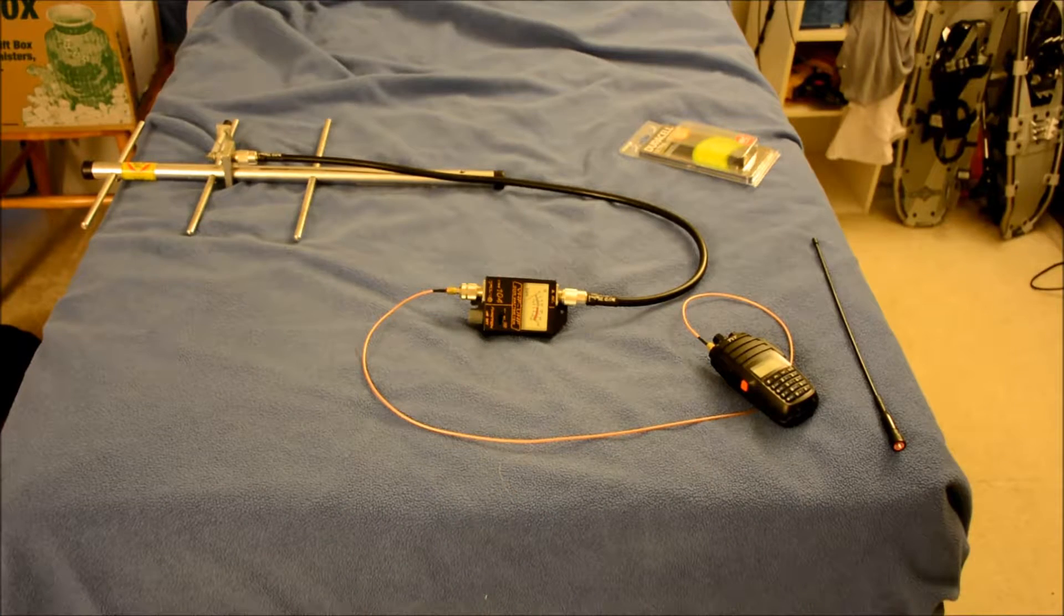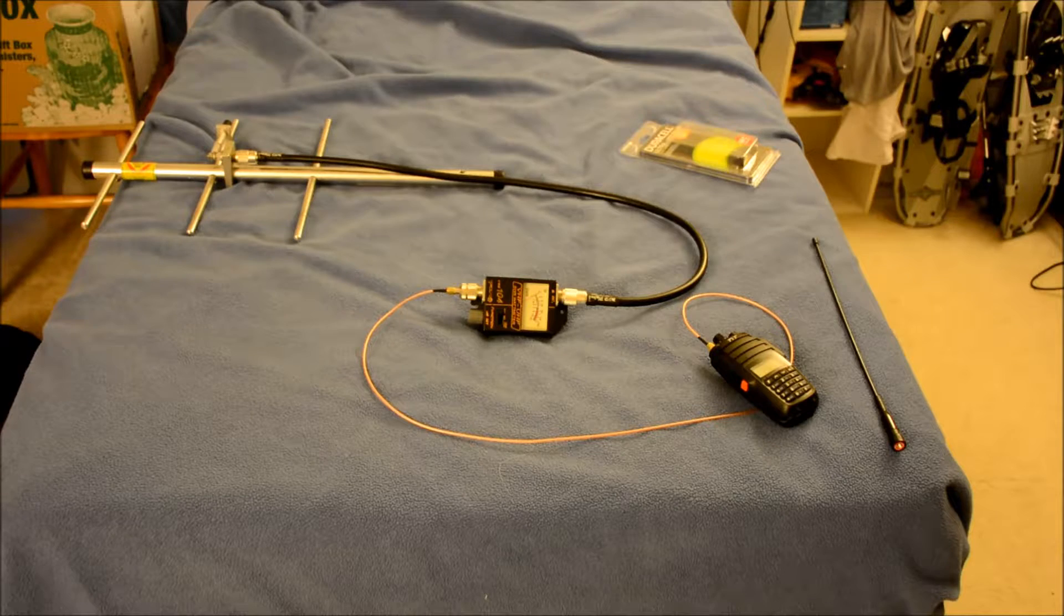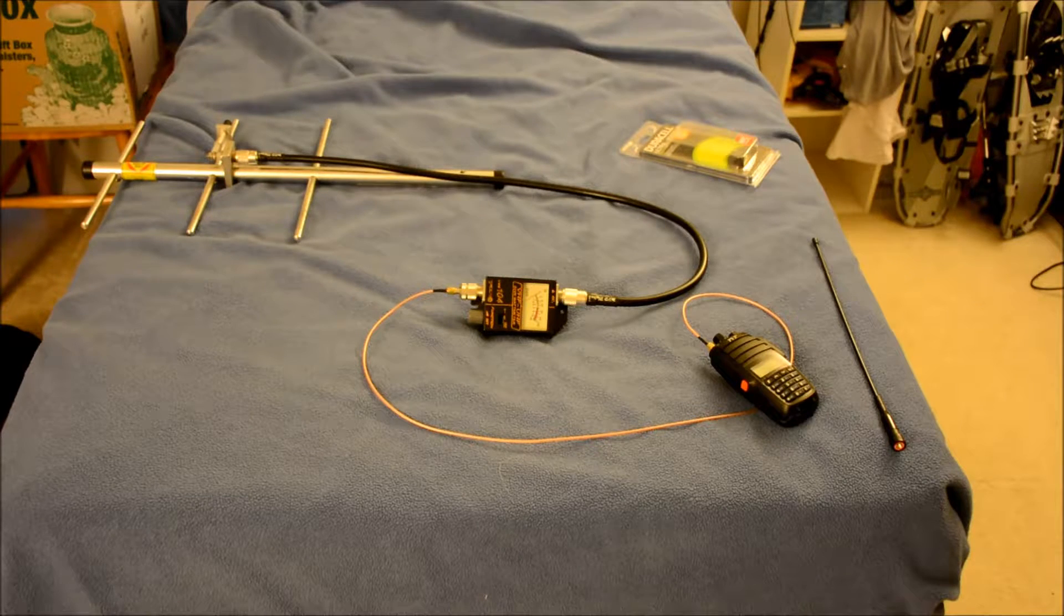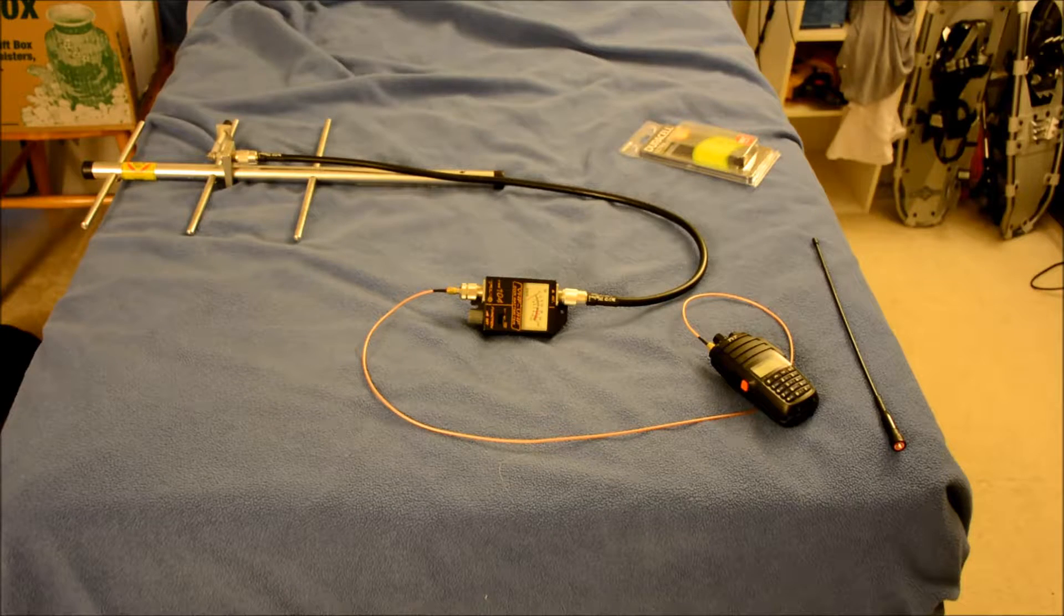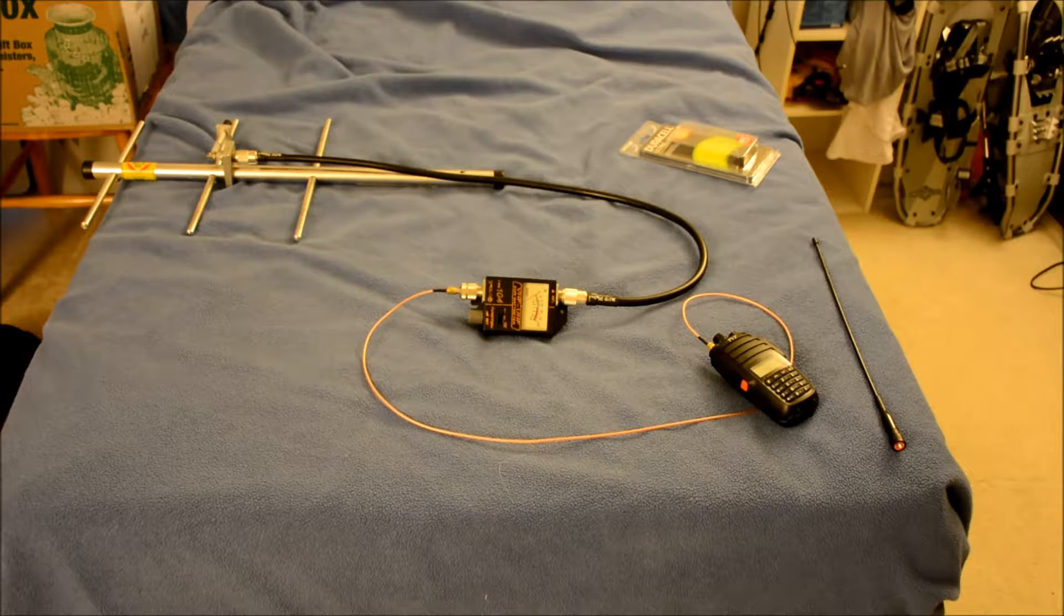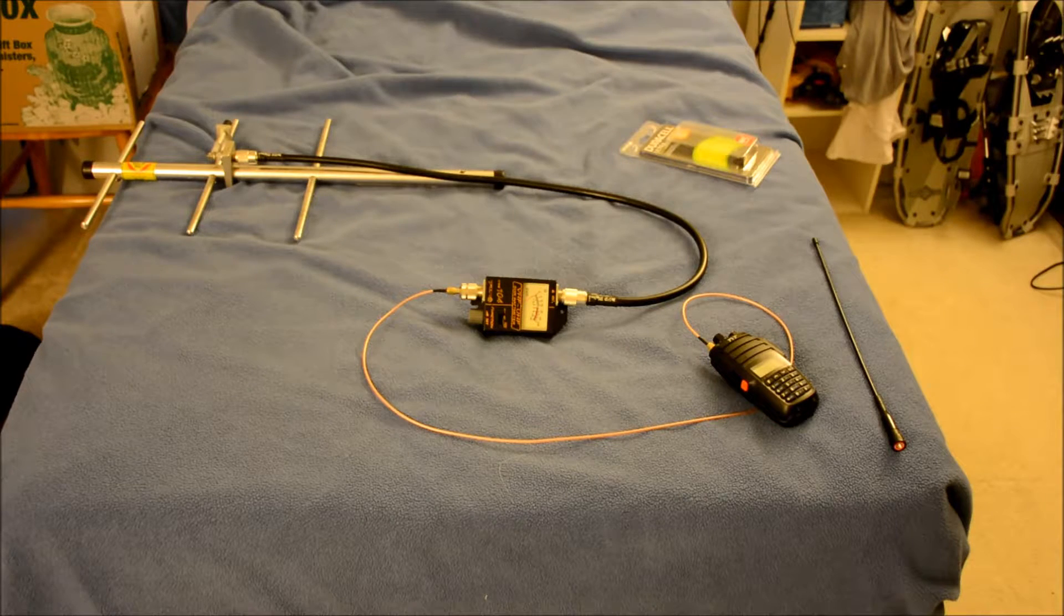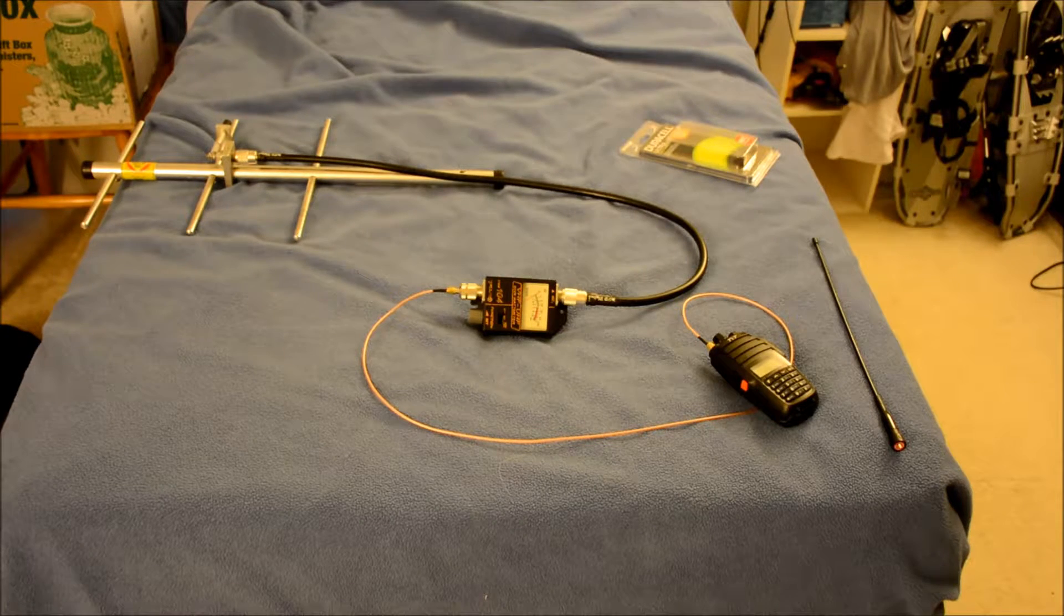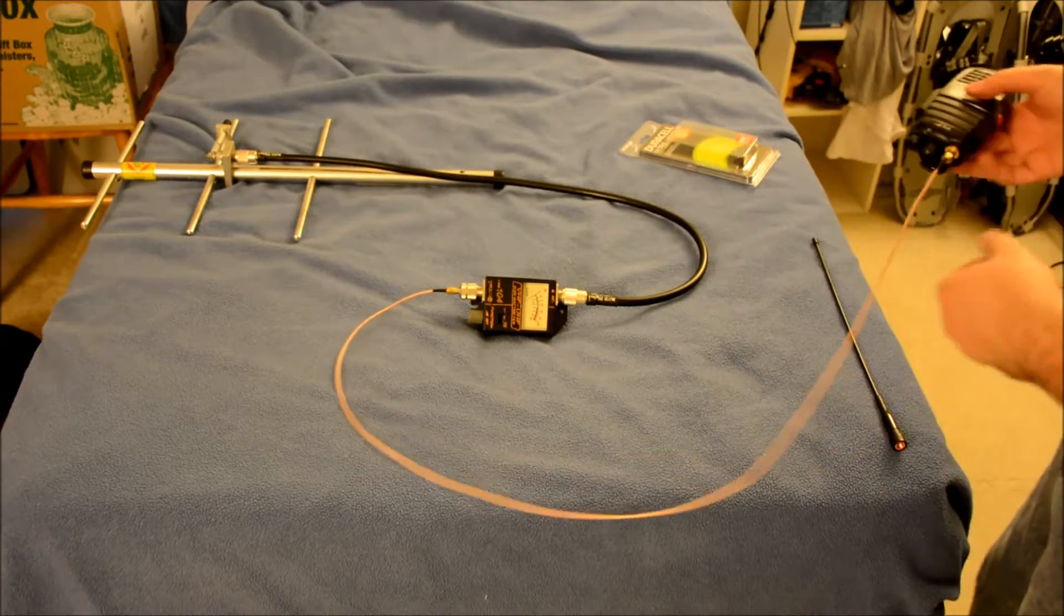Here we are, got this set up in the bedroom. That's the most out of the way place as far as not being close to metal things, other antennas, bicycles, wires, all that stuff. It can get a few feet away from all those things. And at 70 centimeters, that's enough that it doesn't make too much of a difference.